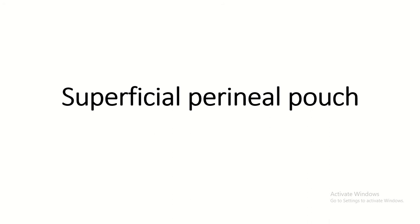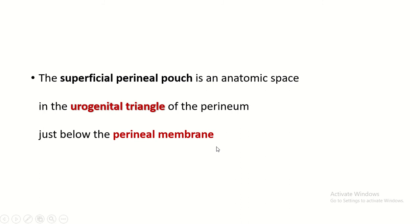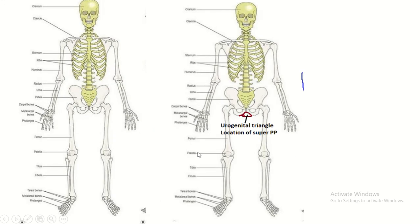In this video I discuss briefly the superficial perineal pouch. It is an anatomical space in the urogenital triangle of the perineum, just below the perineal membrane.